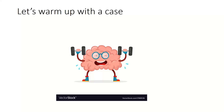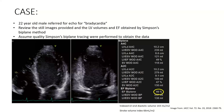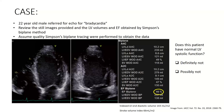We'll start by getting warmed up with a short case. You're presented with a 22-year-old gentleman who's referred to you for echo for bradycardia. Please review the still images provided, including the LV volumes and LVEF obtained by Simpson's biplane, assuming that the Simpson's biplane was performed with excellent tracings. Let me know if you think this patient has normal systolic function, and whether you would say they definitely do not have normal function, or whether they possibly do not have normal function.